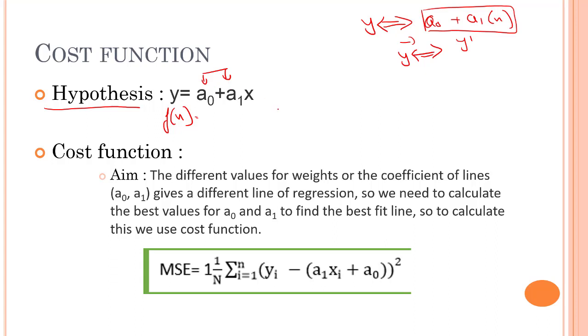Again, one more thing to note over here is that in some places or in some other notes, you might see that a0 and a1 written actually as theta, that is theta0 and theta1, and f(x) might be written as h(x). Both are completely same, only the notation has been changed. Each and every writer follows a different sort of notation.